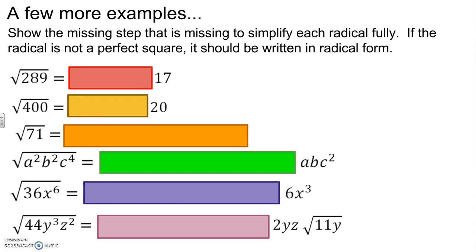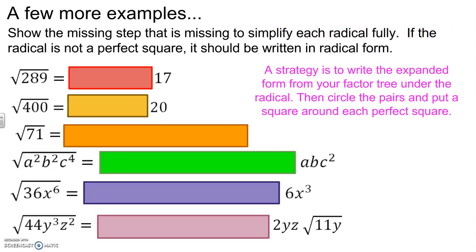So a few more examples. When you're doing these, try to show the missing step that we used to get there. For example, the square root of 289 is 17. So that tells us a little bit about that particular number.